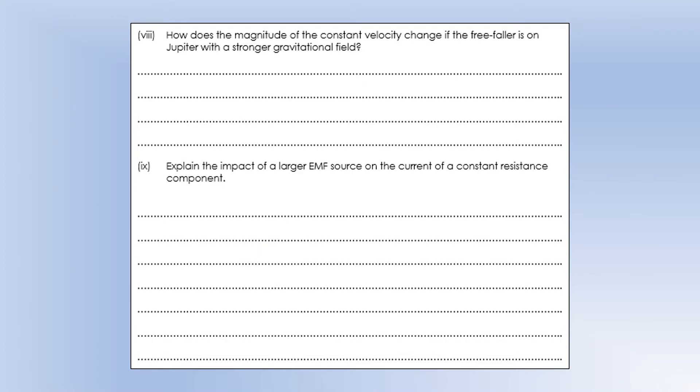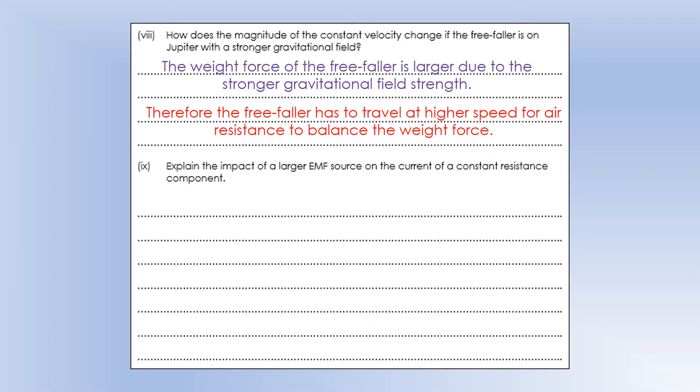So how does the magnitude of the constant velocity change if the free-faller is on Jupiter with a stronger gravitational field? For the purpose of this question, I'm assuming the atmospheres are pretty much the same. If the force of gravity or the weight force is stronger, that's going to mean that you're going to need air resistance to be bigger to balance the weight force. So in order to achieve that, the free-faller would travel at higher speed for those two forces to balance.